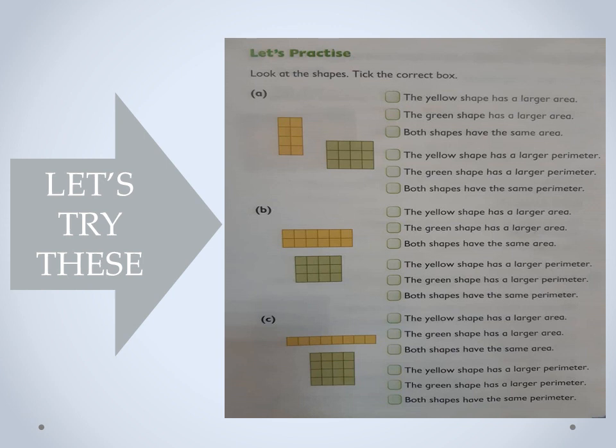For the green shape, our width is three and our length is four — three multiplied by four is twelve, so we have twelve square centimeters. So the yellow shape does not have a larger area. The green shape has a larger area — correct. That's the answer we tick. Both shapes having the same area is also not true.